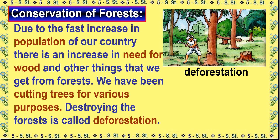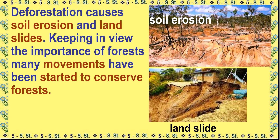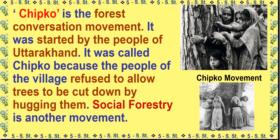Due to the fast increase in population, there is an increase in need for wood and other things from forests. We have been cutting trees for various purposes. Destroying the forests is called deforestation. Deforestation causes soil erosion and landslides. Many movements have been started to conserve forests. Chipko is the forest conservation movement started by the people of Uttarakhand. It was called Chipko because the people of the village refused to allow trees to be cut down by hugging them.